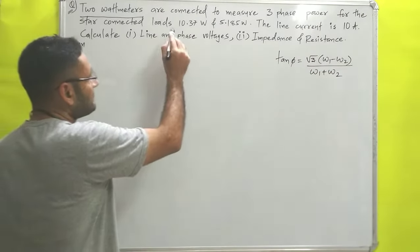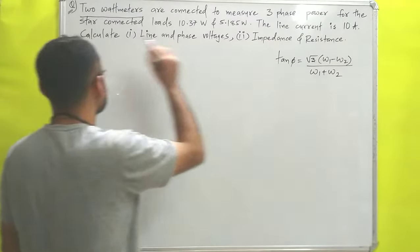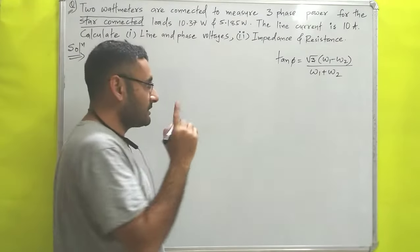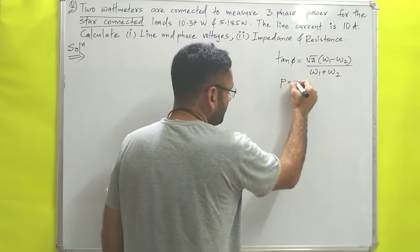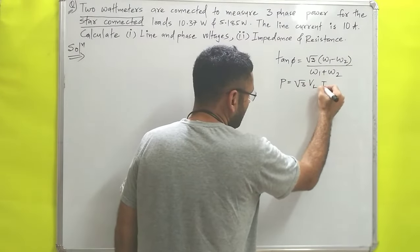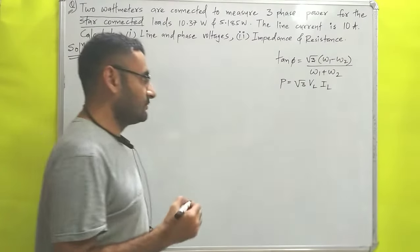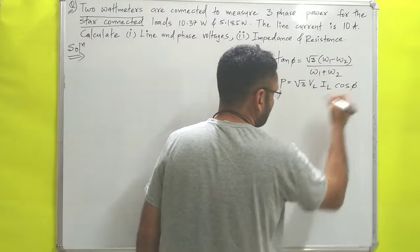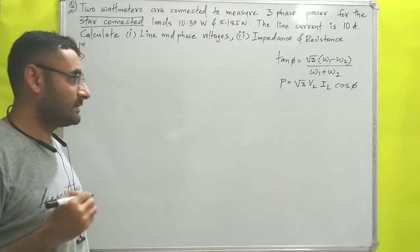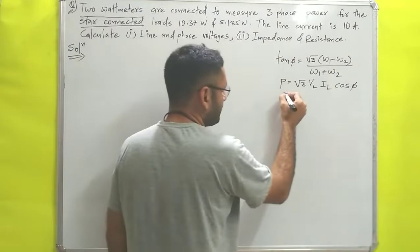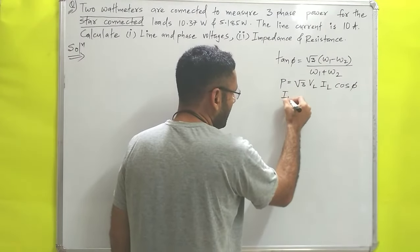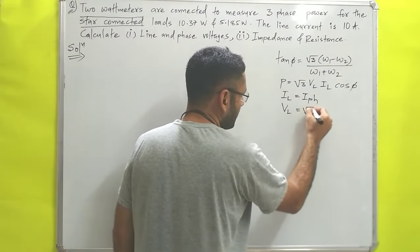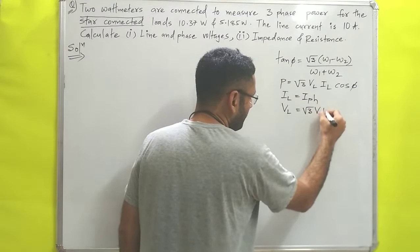Next, the load is star connected. For the star connection we derived the power equation P = √3 × VL × IL × cos φ, where IL is line current and VL is line voltage. We also derived that for star connection, line current equals phase current, and line voltage equals √3 times phase voltage.